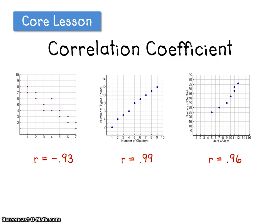Well, why does that one have a negative correlation coefficient when the other two had positive correlation coefficients? Well, when it's a positive correlation, the correlation coefficient is also positive. When the correlation is negative, the correlation coefficient is also negative.